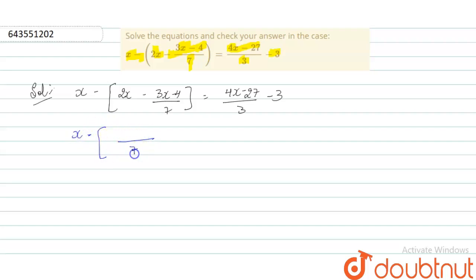The LCM is 7 and what we get is 14x minus 3x minus 4. This equals 4x minus 27 minus 9 upon 3.